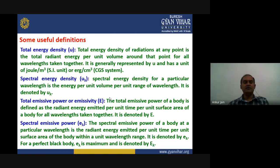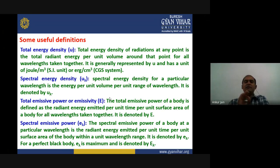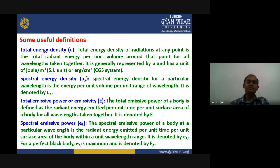The second definition is spectral energy density, represented by u_lambda. Everything is the same as total energy density except it is considered for a unit range of wavelengths. So spectral energy density is the energy radiated per unit volume per unit range of wavelength, denoted by u_lambda. The third definition is total emissive power, represented by capital E, defined as the radiant energy emitted per unit time per unit surface area for all wavelengths taken together.